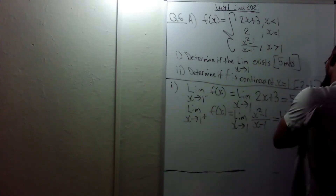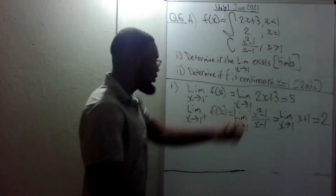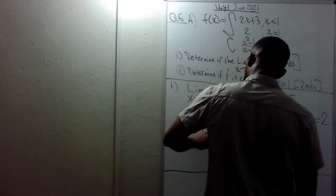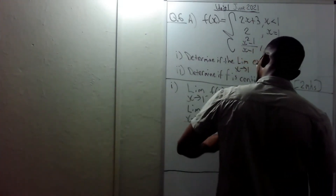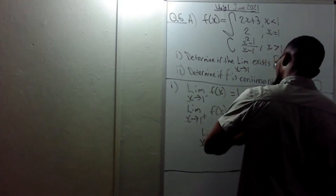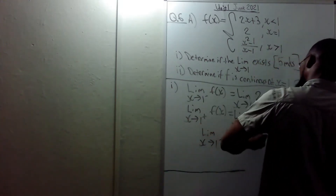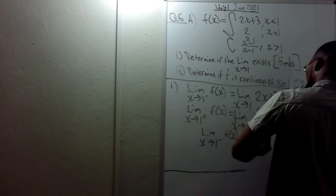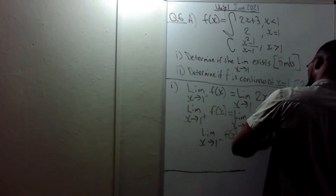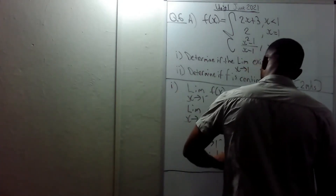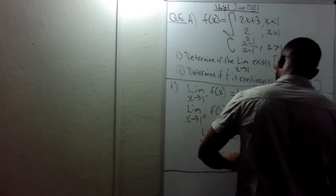Putting in one: 1 + 1 is 2. Now look at that — 5 does not equal 2. So the limit as x approaches one from the left of f(x) is not equal to the limit as x approaches one from the right, and so we can say therefore the limit does not exist.